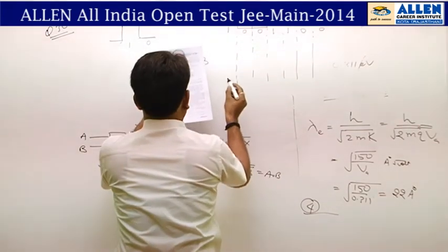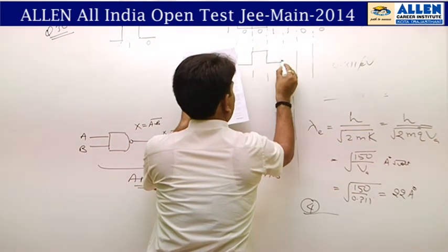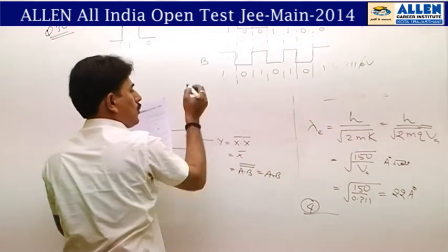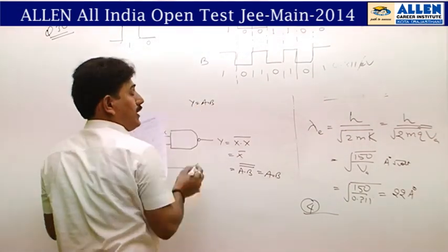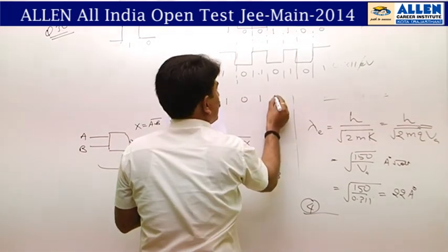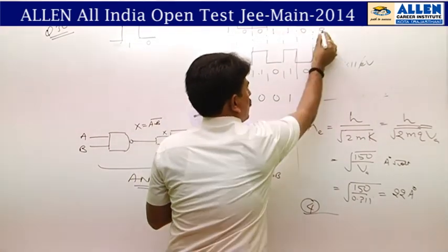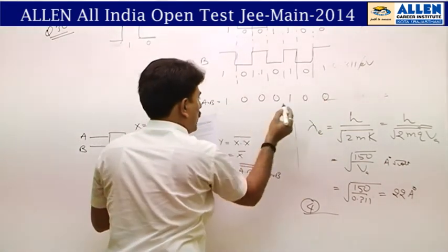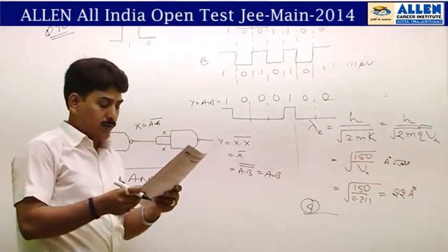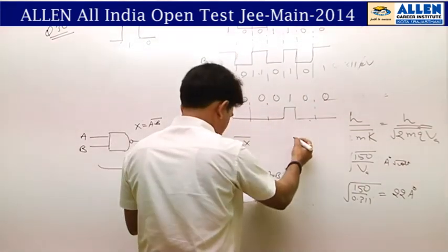Input B waveform reads: 1, 0, 1, 0, 1, 0, 1. Output Y = A·B (AND operation): 1×1=1, 0×0=0, 0×1=0, 1×0=0, 1×1=1, 0×0=0, 0×1=0. So output is: high, low, low, low, high, low, low — which matches the 3rd option. The correct answer for question 30 is option 3.